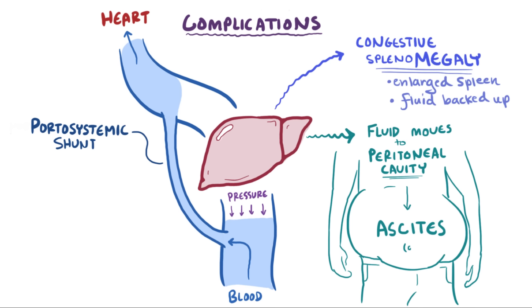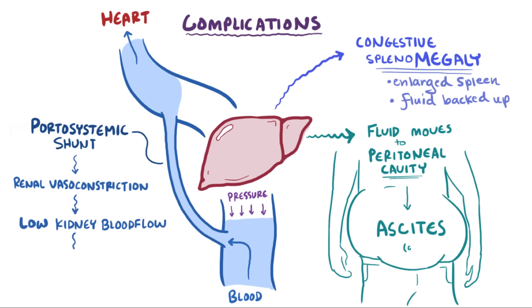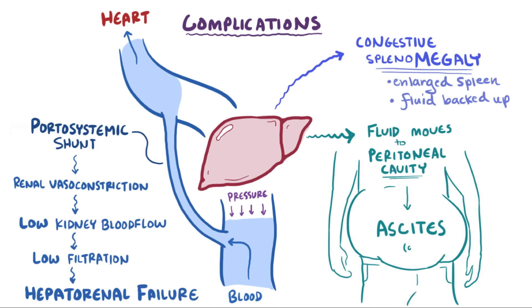Though not fully understood, these changes in portal flow ultimately trigger renal vasoconstriction — increased resistance in the renal circulation — which decreases blood flow through the kidneys, leading to decreased filtration and hepatorenal failure, where kidney failure follows liver failure.